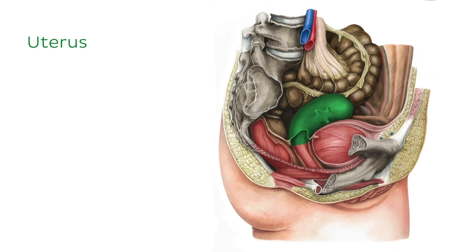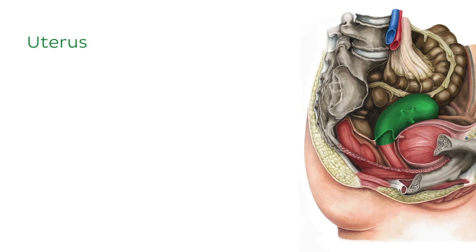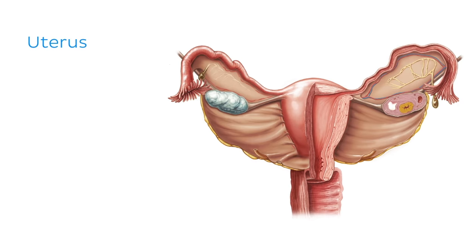As we can see, the uterus sits between the bladder and the rectum, and is connected to the vagina inferiorly. Now that we're familiar with the location of the uterus, let's explore some of its anatomy.